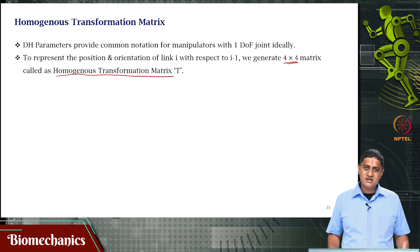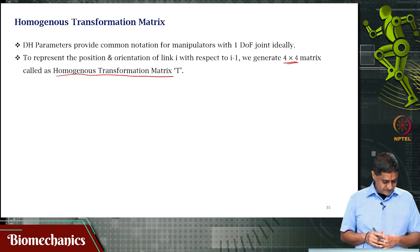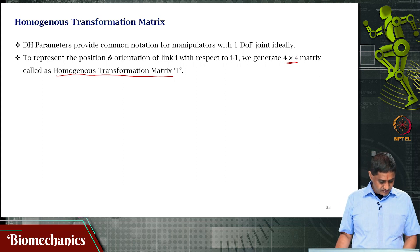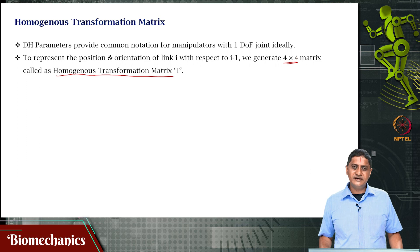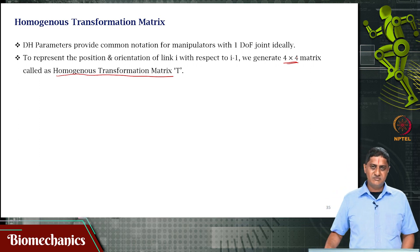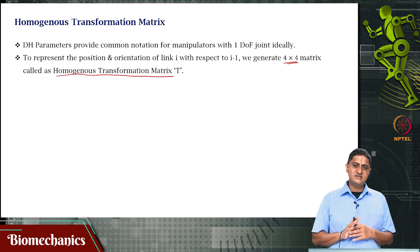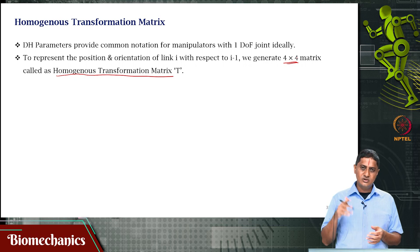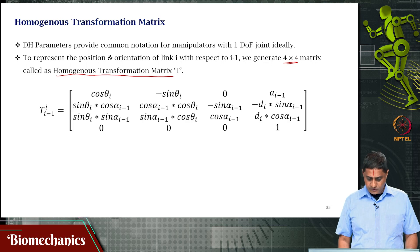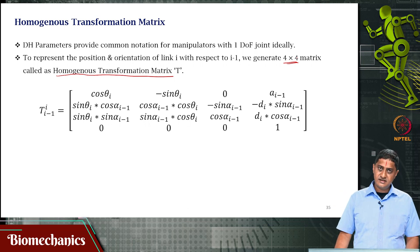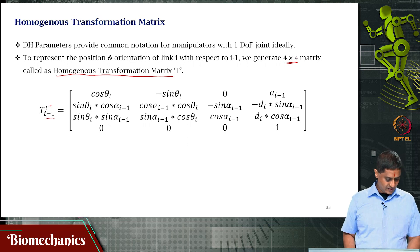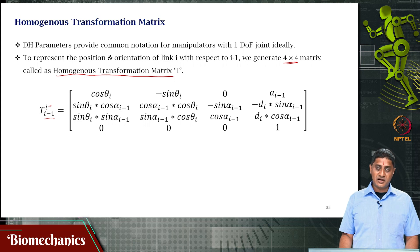Why are we doing this? Because the frame i−1 is transformed to frame i, and so on. This transformation T is the transformation of link i with respect to link i−1. The notation is T subscript i−1 superscript i — a transformation between the (i−1)th frame and the ith frame.